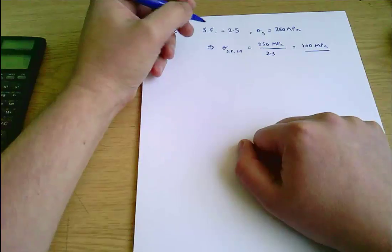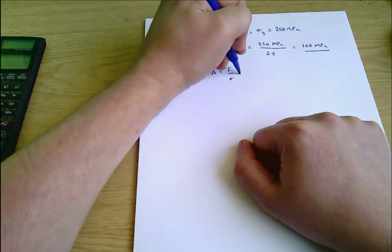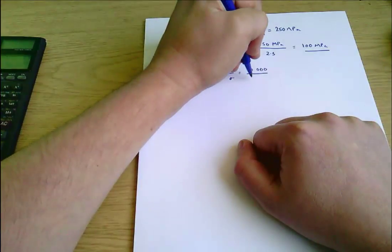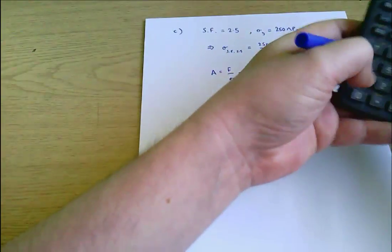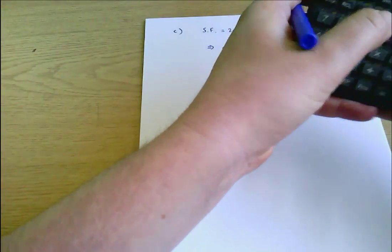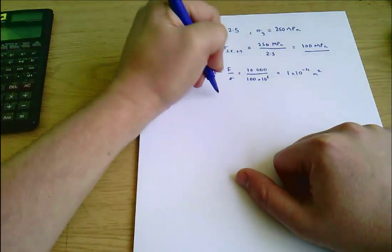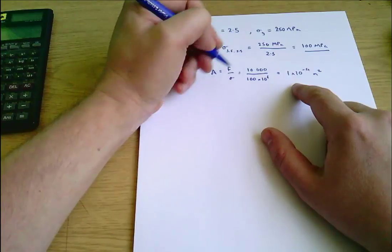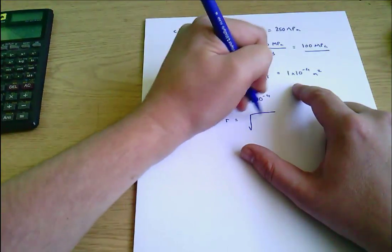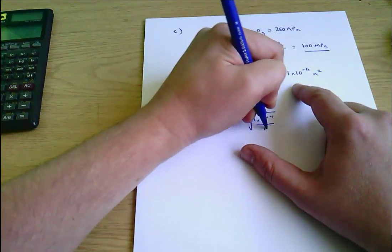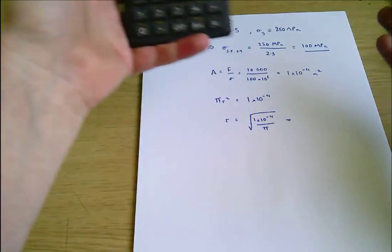Now we just do the same process as before and we know A equals F over sigma equals 10,000 over 100 times 10 to the 6 which equals 1 times 10 to the minus 4 square meters. And that is pi r squared which means that r equals the square root of 1 times 10 to the minus 4 divided by pi. A lot of this is now following the same kind of process as the answer in part A, so I'm doing it reasonably quickly.